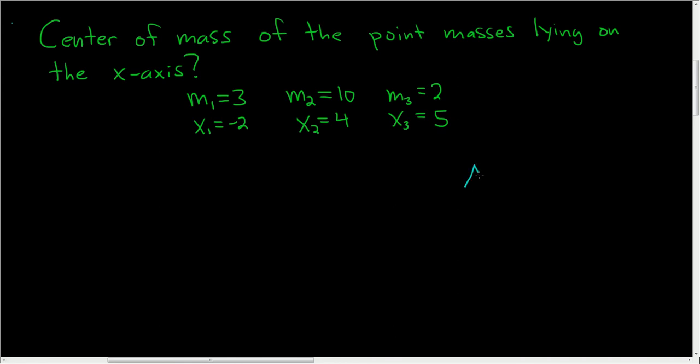Pretend you have a little seesaw. This is actually called the fulcrum. If you have a seesaw with a bunch of little point masses on it and it looks like this, then we say the system's at equilibrium. It's like the balancing point.